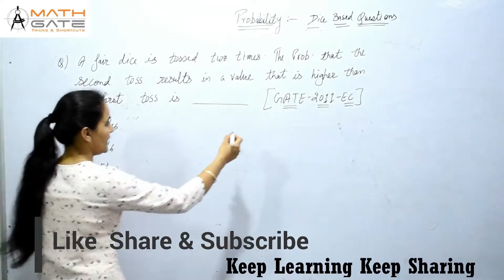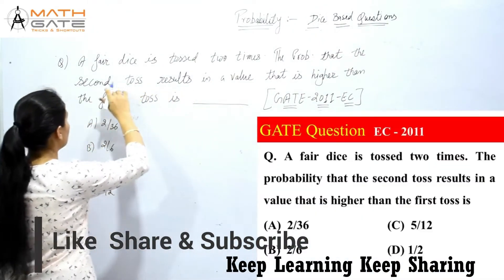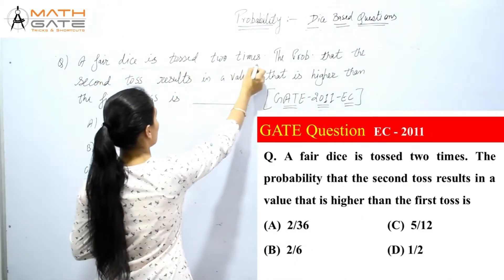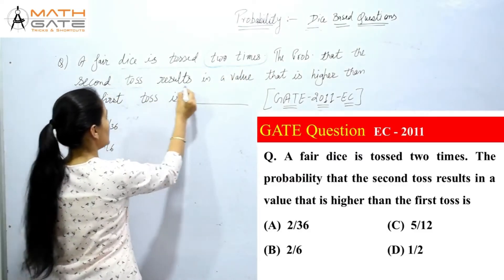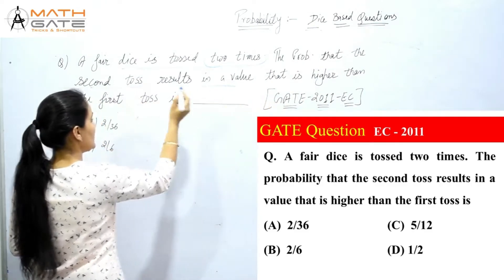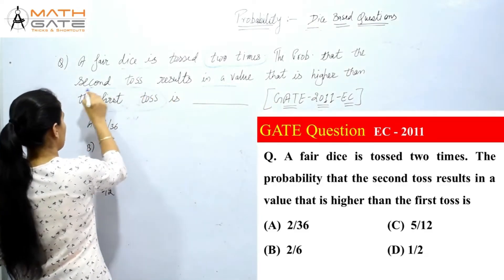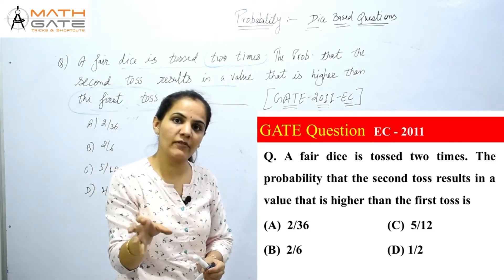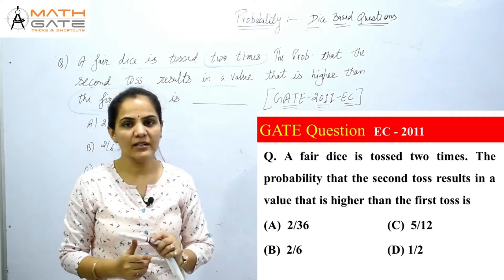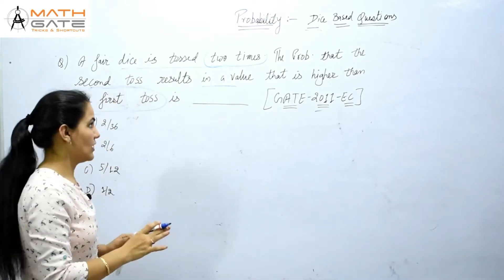This question has been asked in GATE 2011 EC branch. The question is: a fair dice is tossed two times. Find the probability that the second toss results in a value that is higher than the first toss.